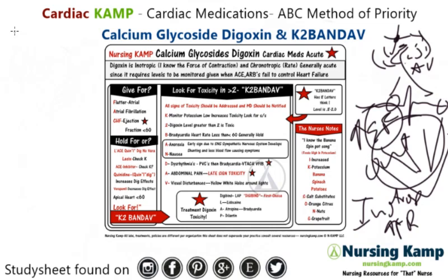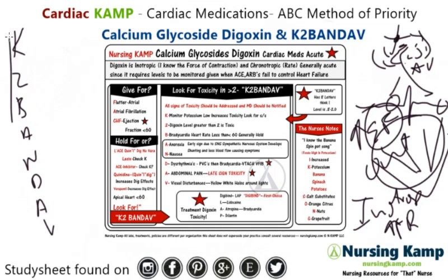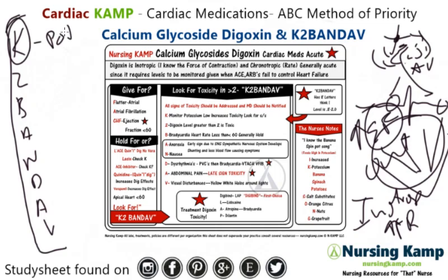So K2BandieAV — these are all the reasons that a person will usually be tested on with digoxin. When we're looking at it, we look at electrolytes. With electrolytes first, we look at potassium, and we worry about potassium being low.